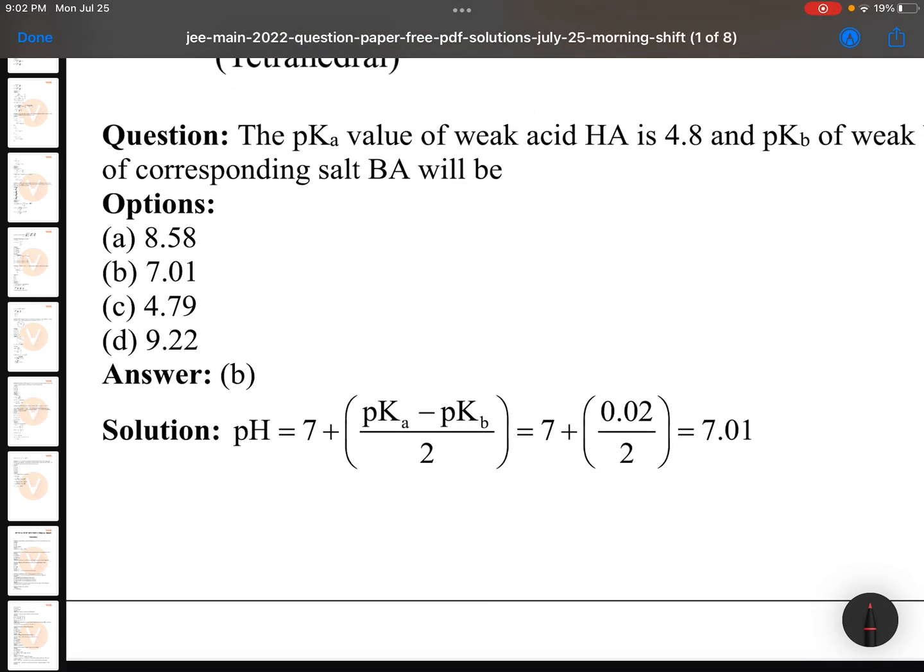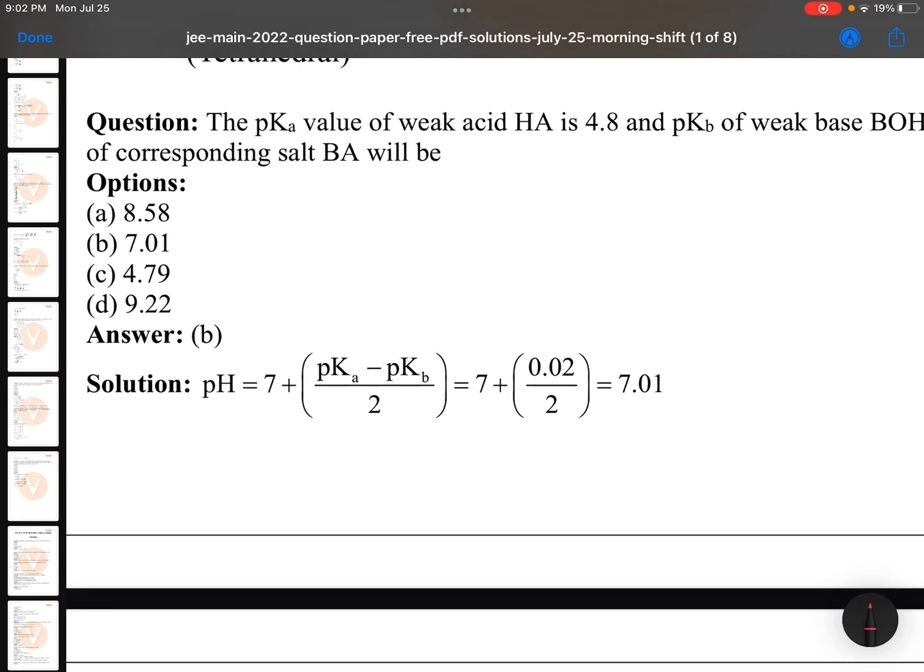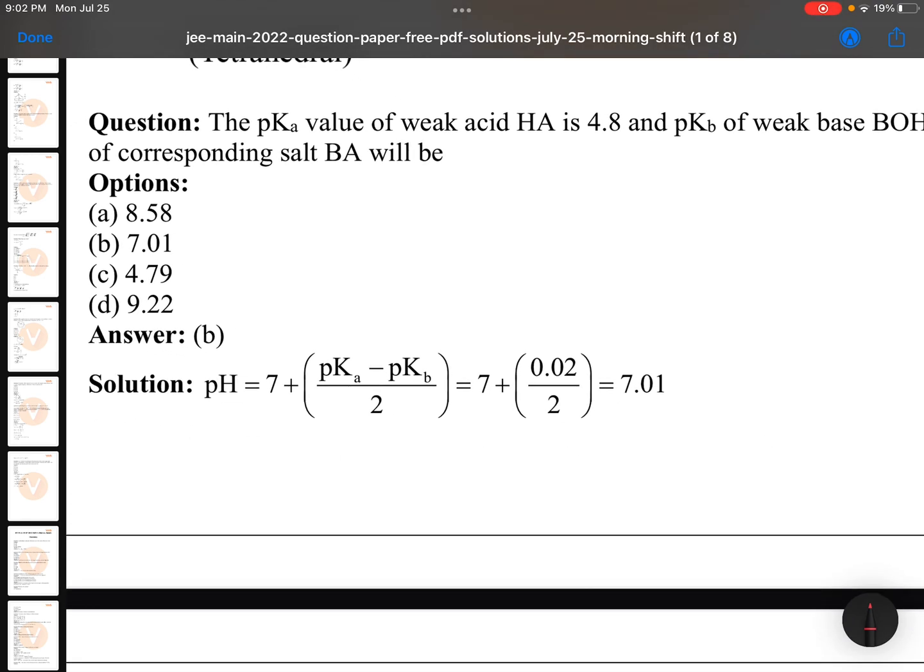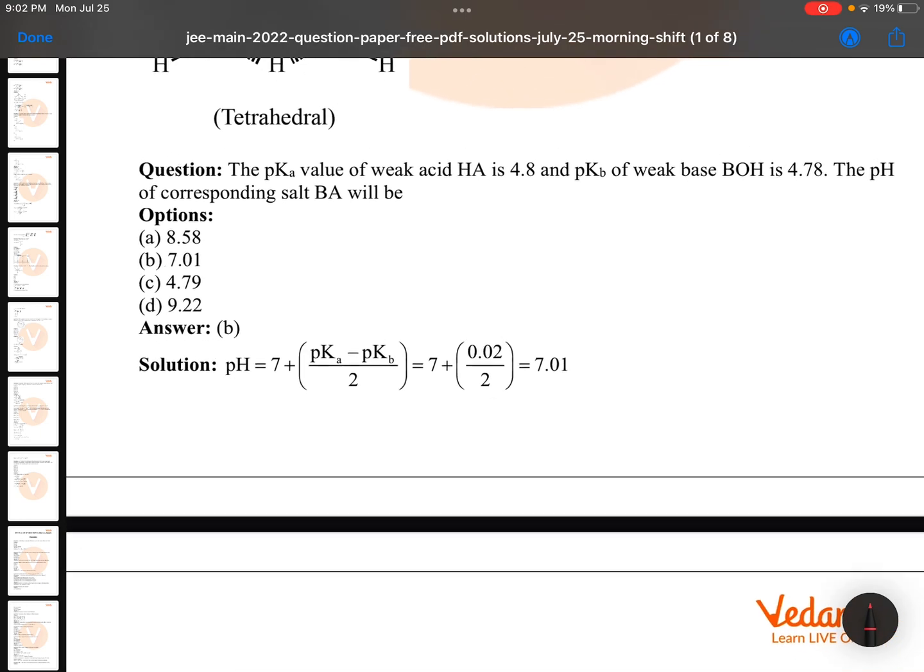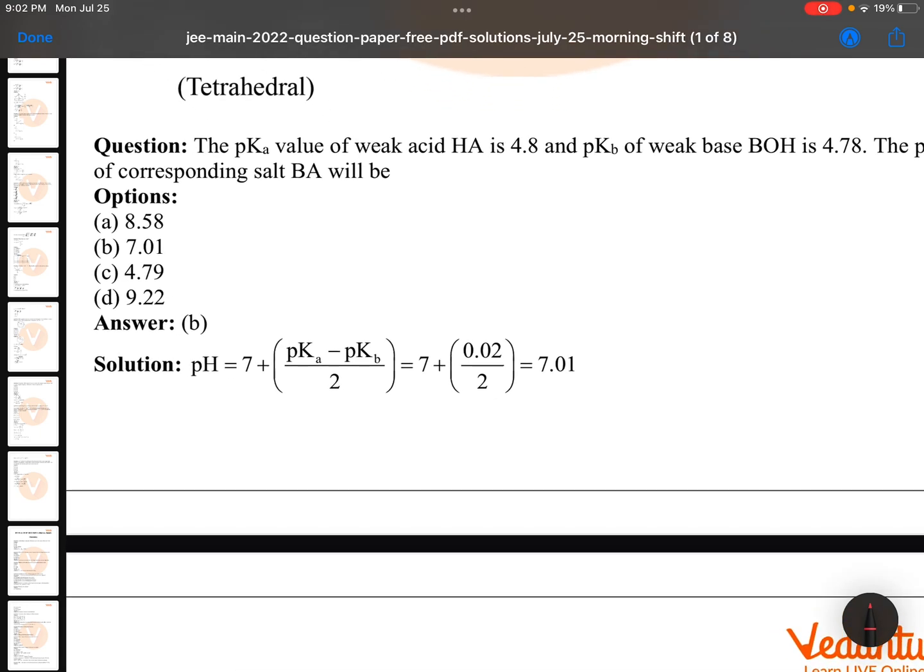The pKa value of weak acid and weak base are given here and asking about the salt. So pH of the salt made up of weak acid and weak base is pH equals 7 plus half pKa minus half pKb, or 7 plus (pKa minus pKb) by 2. That is 7.01. You are very lucky because by seeing the values you can say it will be either 7.01 or 6.99.